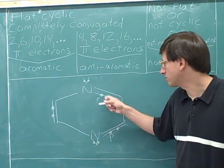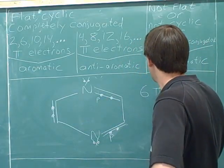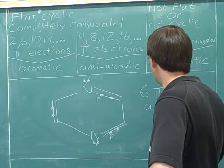So that gives us one, two, three, four, five, six pi electrons. So this molecule is aromatic.